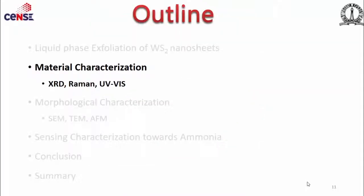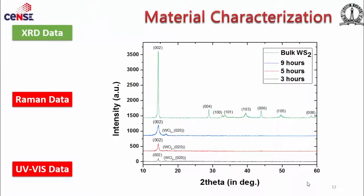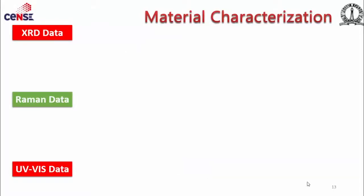Coming to material characterization of WS2 nanosheets: in the XRD, the 002 plane of WS2 shows increasing intensity, confirming exfoliation in that direction. This corresponds to the 2H phase, which is the semiconducting phase of WS2. For the three to nine hour samples, no other peaks are observed, confirming exfoliation.